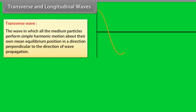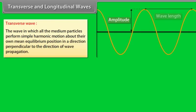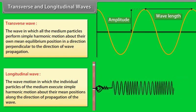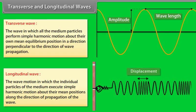Transverse and longitudinal waves. A transverse wave is a wave in which all the medium particles perform simple harmonic motion about their own mean equilibrium position in a direction perpendicular to the direction of wave propagation. Longitudinal wave motion is that wave motion in which the individual particles of the medium execute simple harmonic motion about their mean positions along the direction of propagation of the wave.